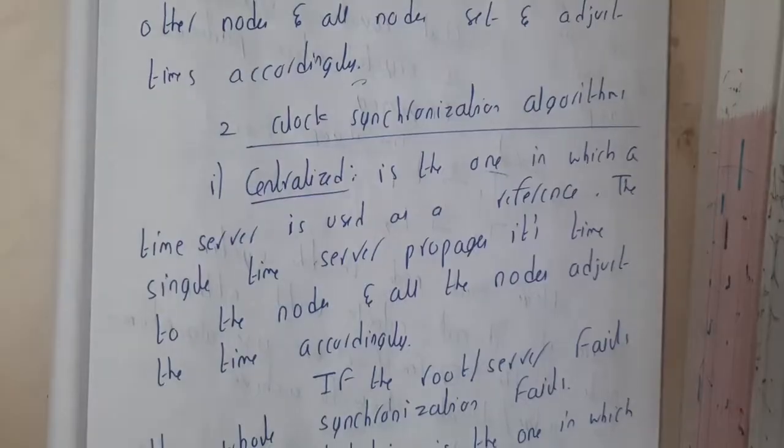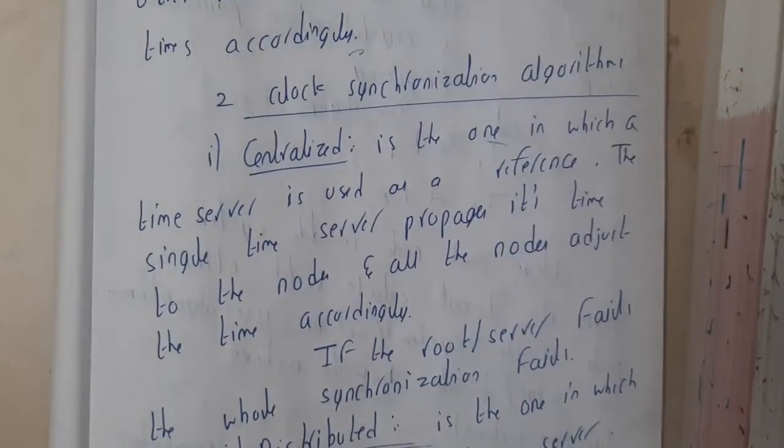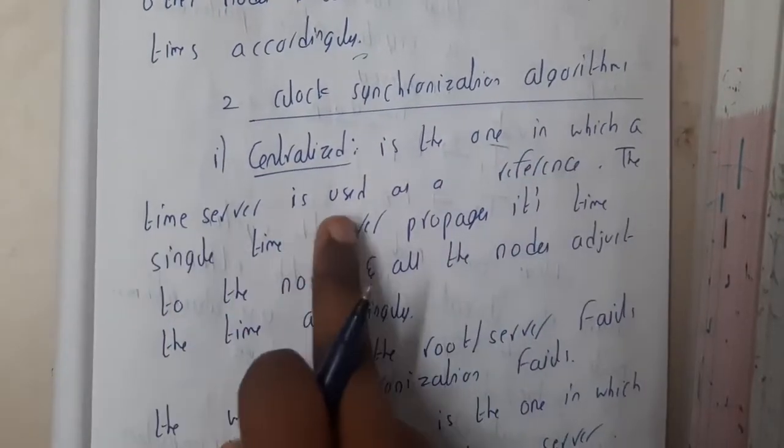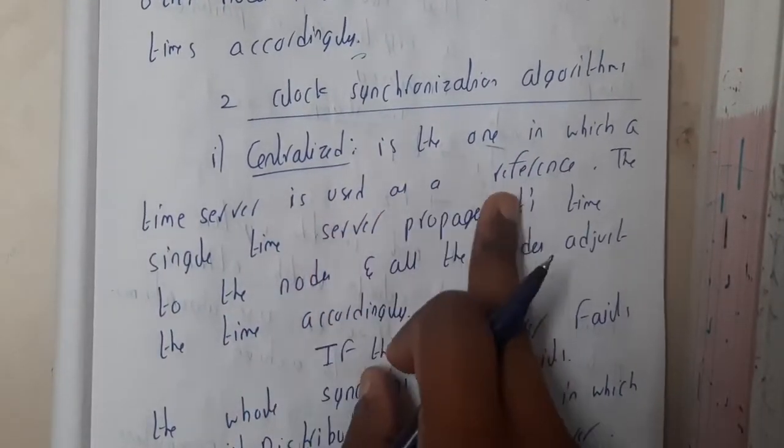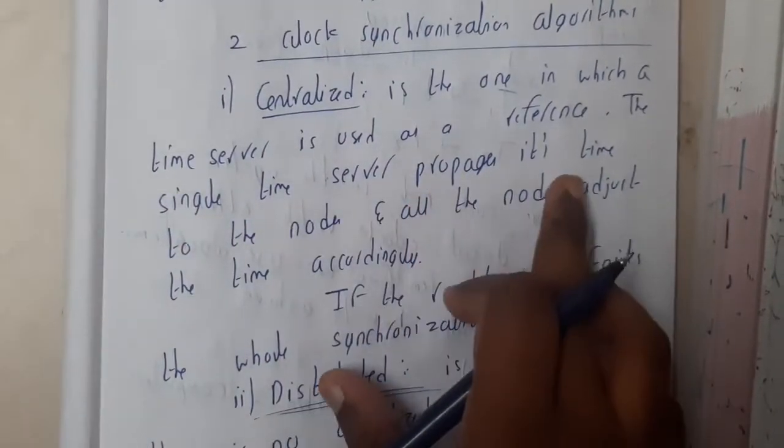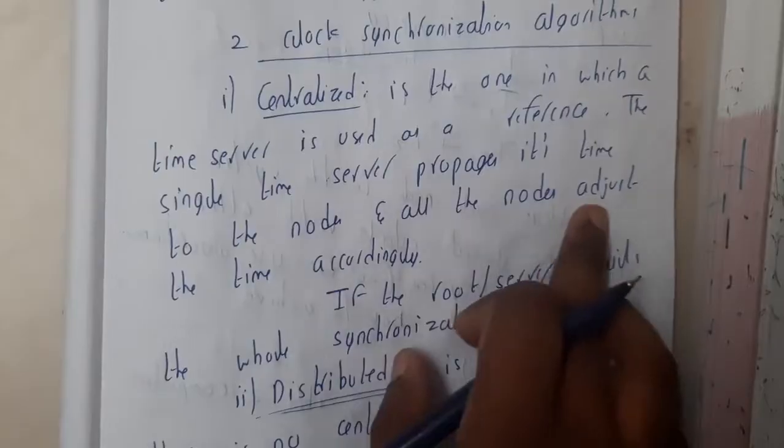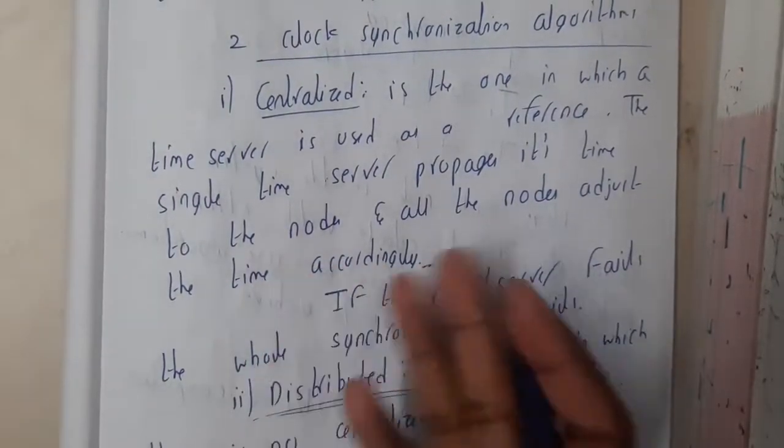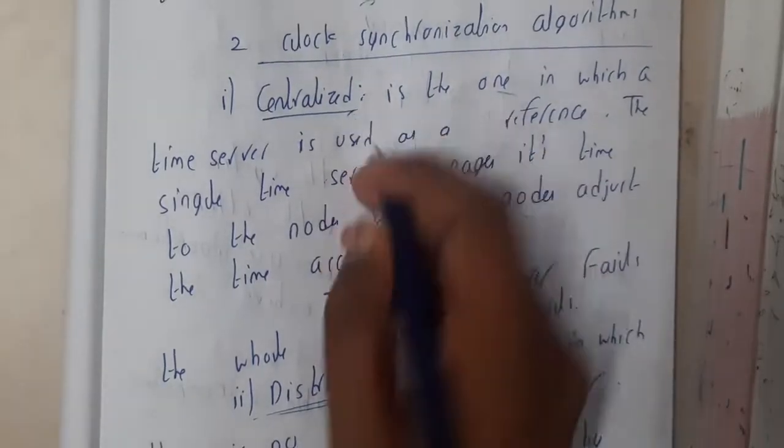Centralized is the one in which a time server is used as a reference. The server time is used as a reference. The single time server propagates its time to nodes and all the nodes adjust their time accordingly. Based on the server time, everyone will adjust. That is centralized synchronization.